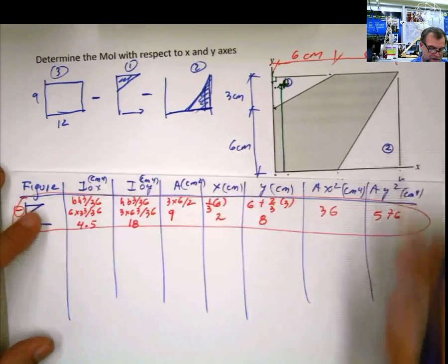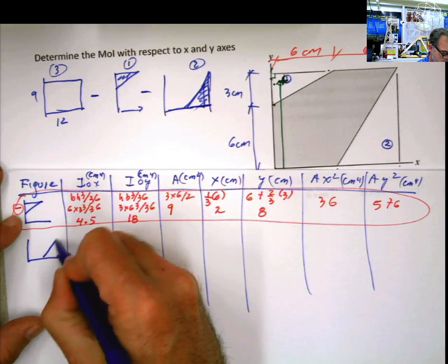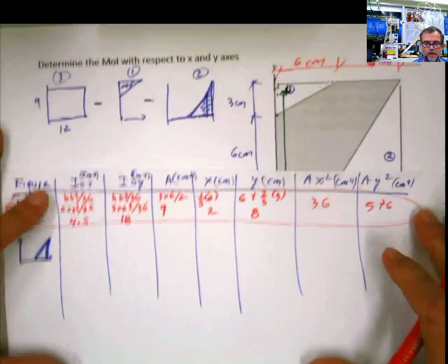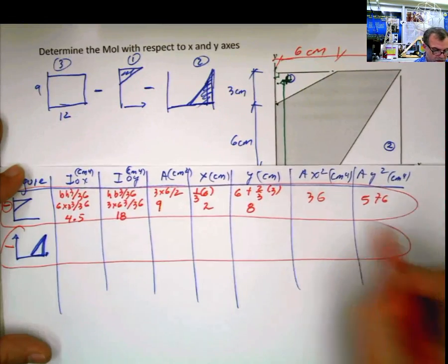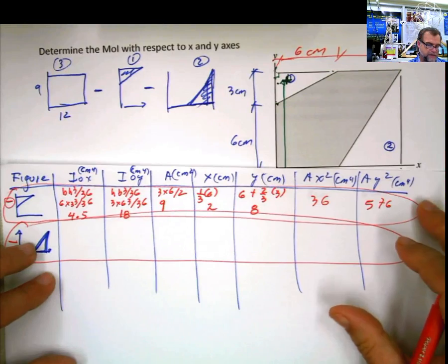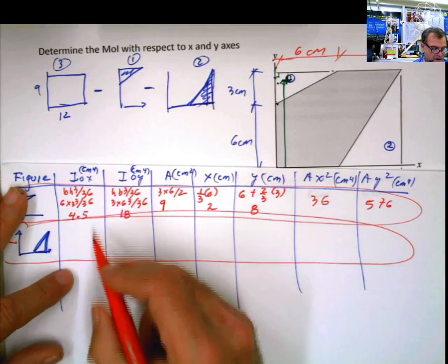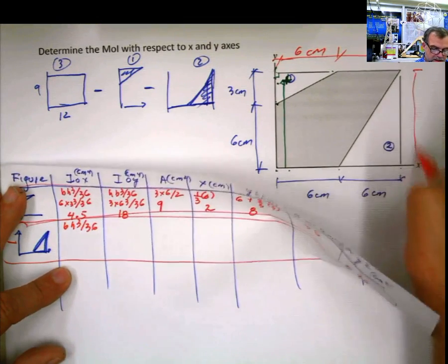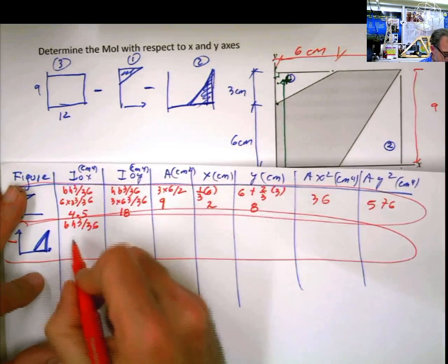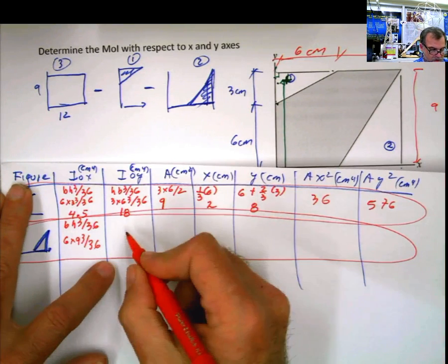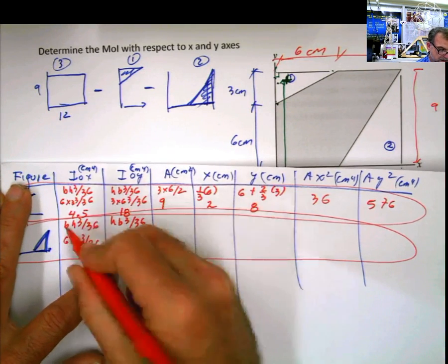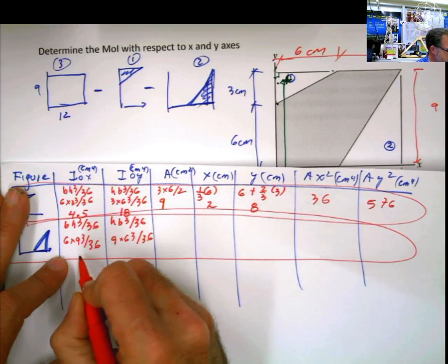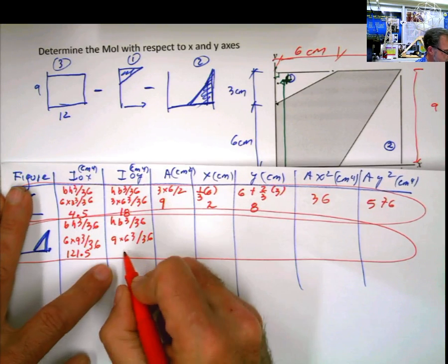Next figure is this one. I'm going to put my reference here so I don't forget that it's like that. And immediately, once I do that, guys, please remember, once you do that, put the negative sign in front. Mark the whole thing here. And I'm going to do it also in red pen, just to remind myself that this is a negative area. bh cubed divided by 36. What is b? 6. What is h? 9. So 6 times 9 to the third divided by 36. i sub 0 y, hb cubed divided by 36. 9 times 6 cubed divided by 36. This value here is 121.5. This value here is 54.